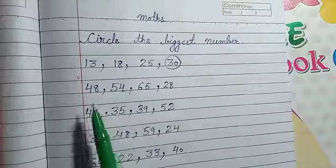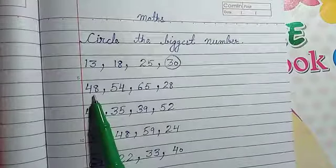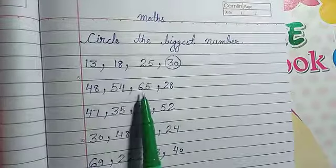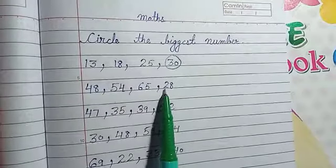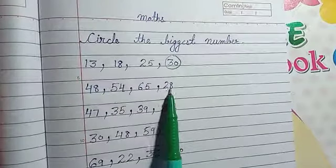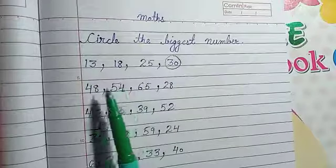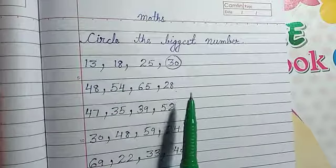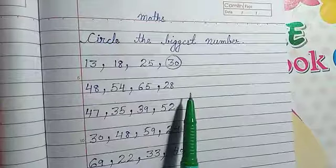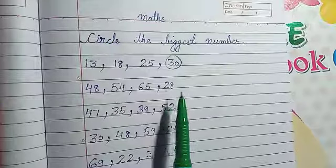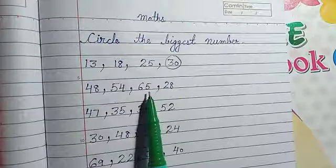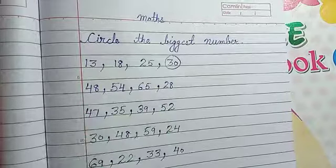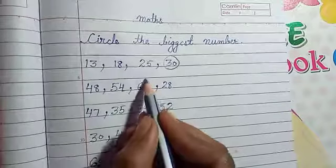Here is 48, 54, 65 and 28. Which is the biggest of all number? 65. 65 is the biggest of all number.